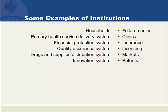The quality assurance system uses an institution called licensing — the idea that one has to prove their competence by taking exams and passing through requirements in order to get a piece of paper called a medical license or a nursing license.